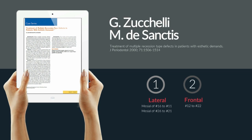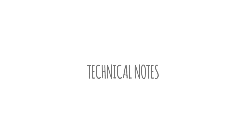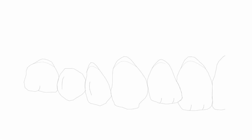We select the appropriate technique for each case based on the existence of a recession on the canine. When using the coronally advanced envelope flap, we create surgical papilla through the use of oblique permarginal incisions. These surgical papilla are subsequently mobilized and sutured coronally.